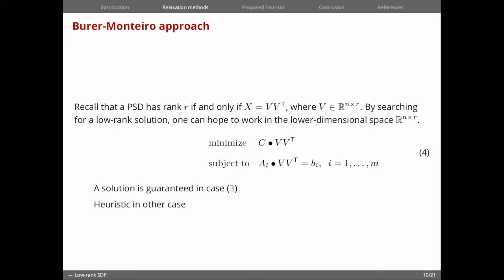The number r can be either chosen to be an upper bound in the minimum rank solution as shown in case three. And if this is not the case, it's going to be just a heuristic.